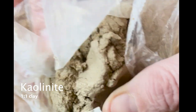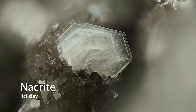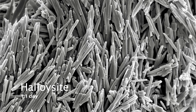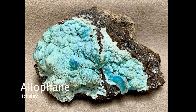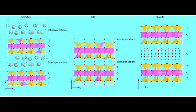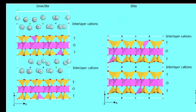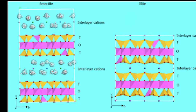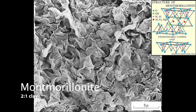Besides kaolinite, the other common 1-1 clays are dickite, nacrite, halloysite, and allophane. The main 2-1 clays are best broken into the smectite group, the mica group, and the chlorite group. The smectite group is characterized by new ions replacing aluminum in the aluminum sheet, which can make a wide range of different clay minerals, but the main one is montmorillonite.